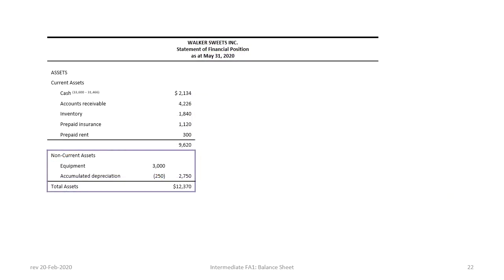After current assets we have long-term assets. In this case we have equipment valued at $3,000 less accumulated depreciation of $250 calculated previously — or accumulated amortization if this were an ASPE statement. Our accumulated depreciation equals the depreciation expense since this is the first year of operation. This gives total long-term assets of $2,750 and therefore total assets of $12,370.